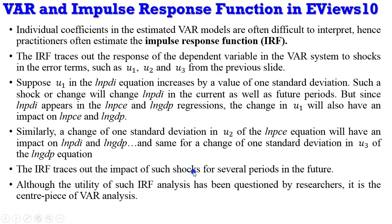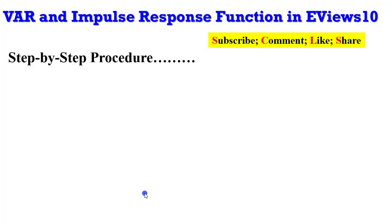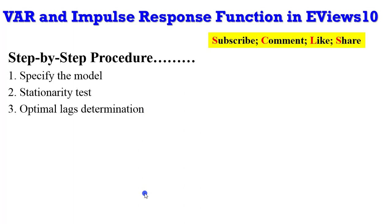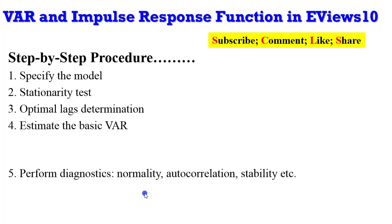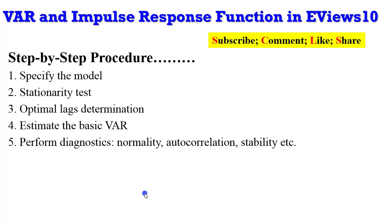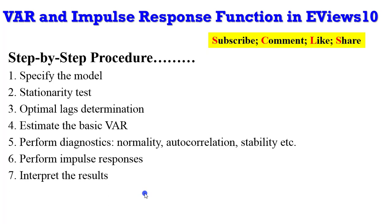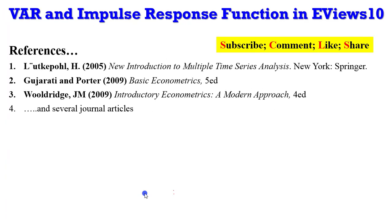As mentioned before, the IRF traces out the impact of shocks for several periods in the future. Although the utility of IRF analysis has often been questioned by researchers, it is still the centerpiece — or workhorse — of VAR analysis. The step-by-step procedure is: (1) specify the model, (2) test for stationarity, (3) determine optimal lags, (4) estimate the basic VAR, (5) perform diagnostics — normality test, autocorrelation, stability — then (6) perform impulse responses and interpret the results.